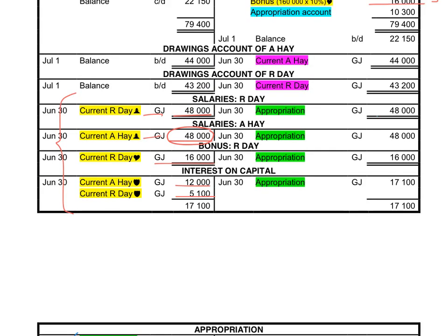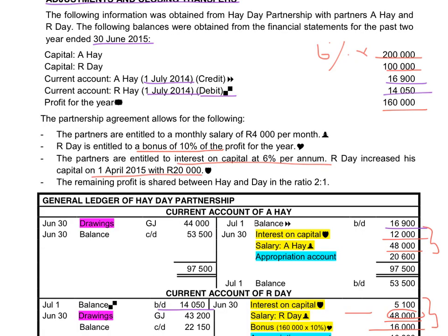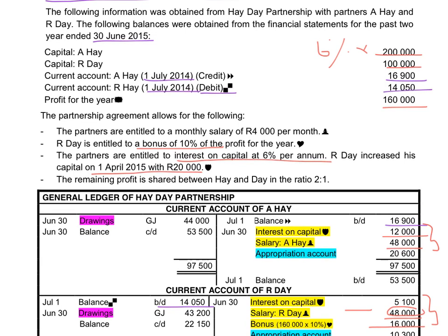The expenses credited were $48,000, $48,000, $16,000, and $17,100 — all transferred to the appropriation account on the debit side. After completing the adjustments — debiting the expense, crediting the current account — and completing the closing transfers — debiting the appropriation account, crediting the expenses — we do the last entry to divide the profit between the two partners in the ratio 2 to 1. After all other expenses are taken into account to reduce the profit of $160,000, the remaining profit is divided between the two partners in the ratio 2 to 1.